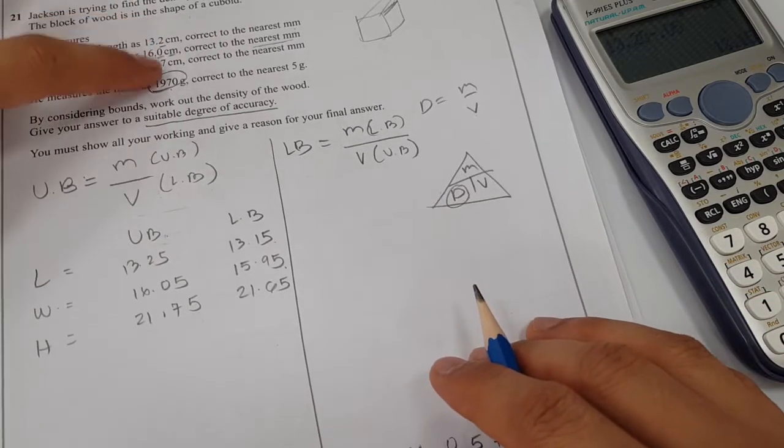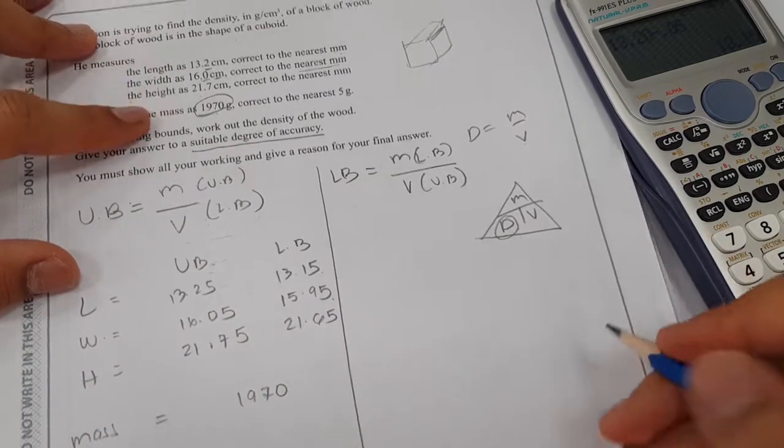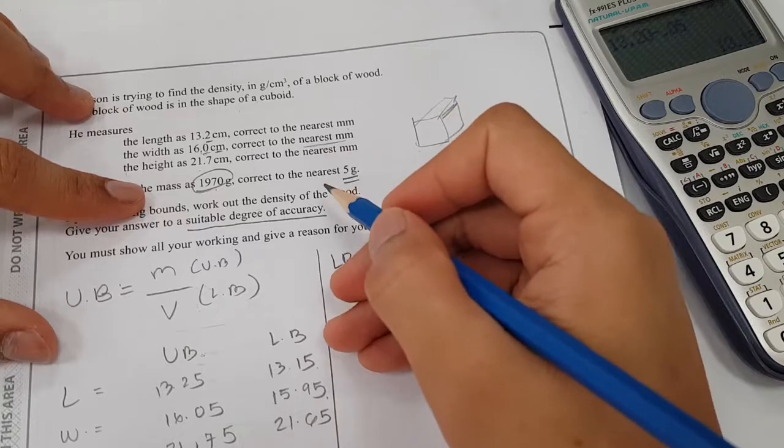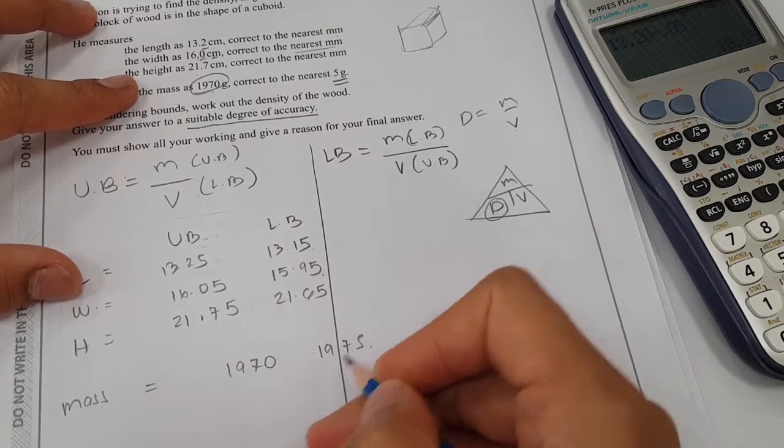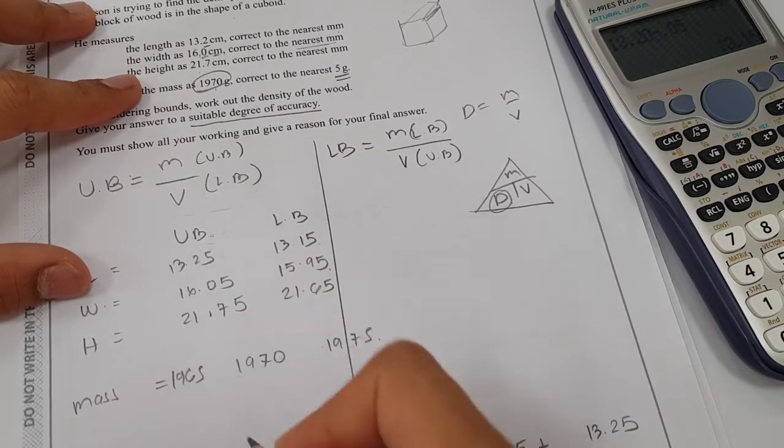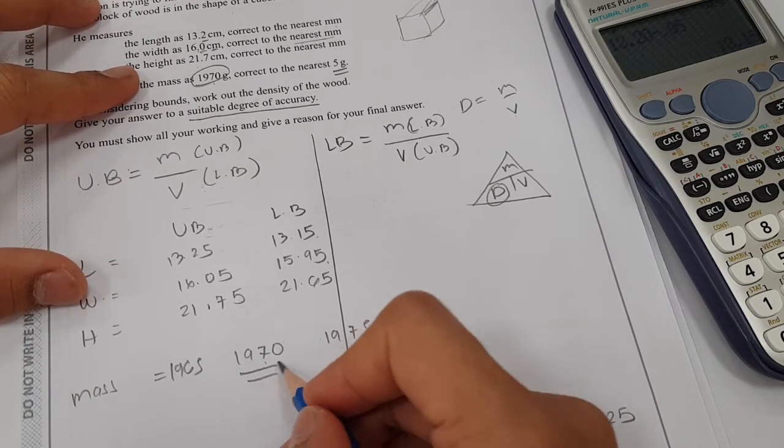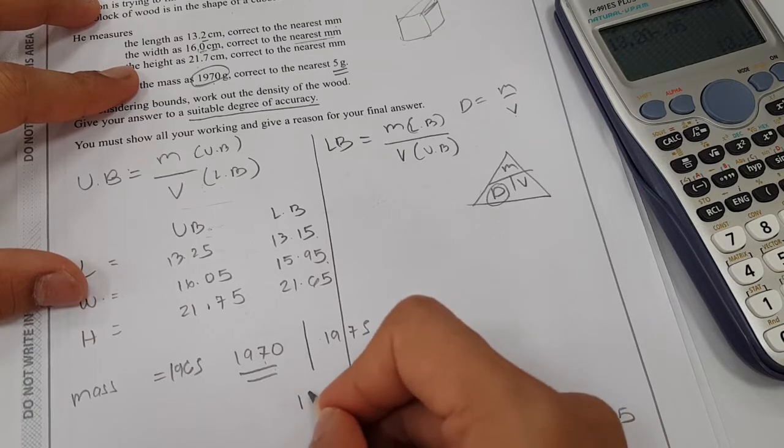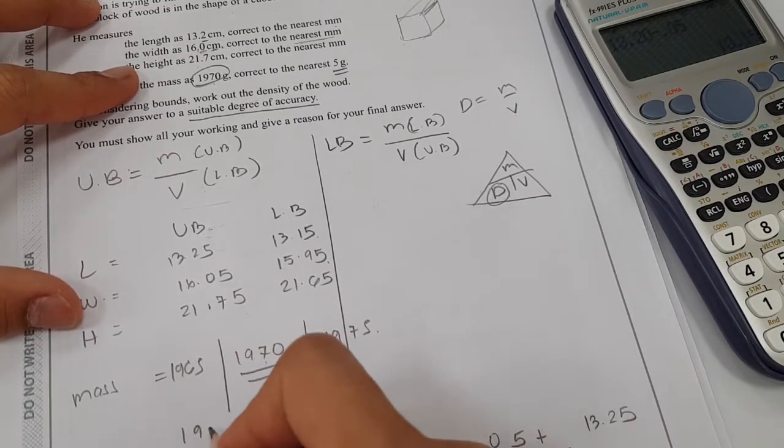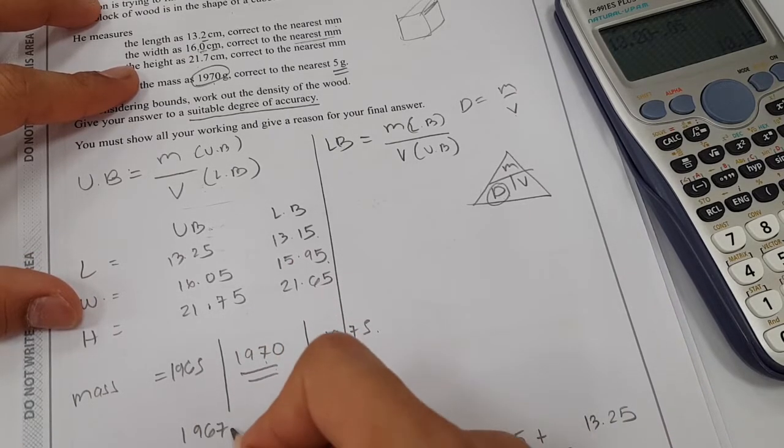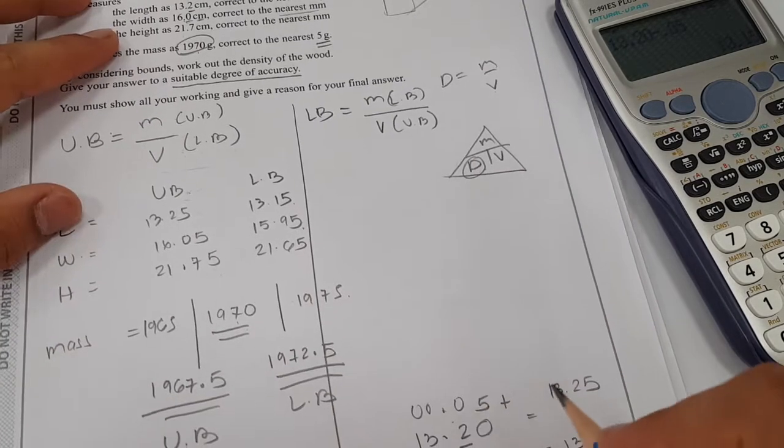Now let's go for the measurement of the mass. The mass is 1970, corrected to the nearest 5 grams. When you see corrected to the nearest 5 grams, the next number would be 1975, and the previous one would be 1965. But since it was rounded to this, the upper bound would be in the middle here, which would be 1972.5. And the middle here would be 1967.5. So this would be your upper bound and lower bound for the mass.